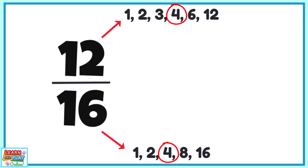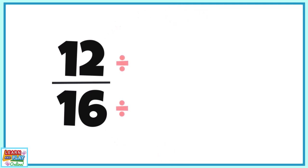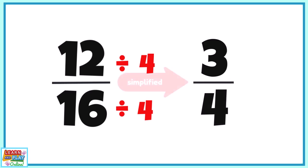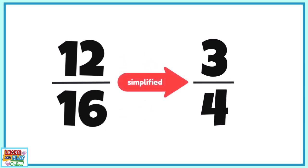Now that we've identified the highest common factor, we need to divide both the numerator and denominator by 4. 12 divided by 4 is 3, and 16 divided by 4 is 4. So 12 over 16 is simplified to 3 quarters.